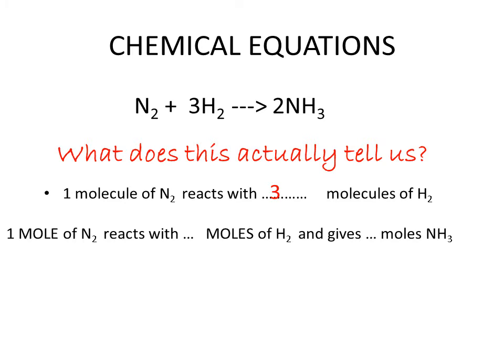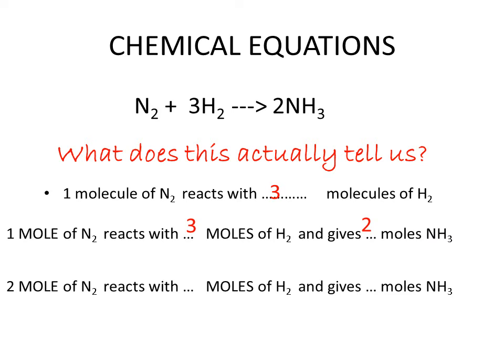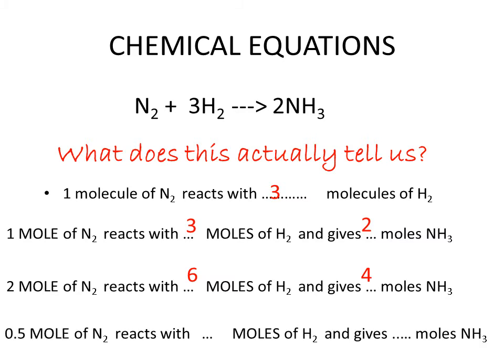So if we took one mole of nitrogen, we would need three moles of hydrogen and it would give us two moles of ammonia. Similarly, if we double the amount of nitrogen, we would double the amount of hydrogen needed and this would also double the amount of ammonia produced. If we halved the amount of nitrogen, the other quantities would also halve and we'd end up with only one mole of ammonia. So a balanced equation is going to be very important in all our stoichiometric calculations.